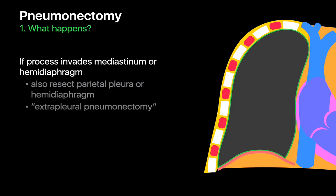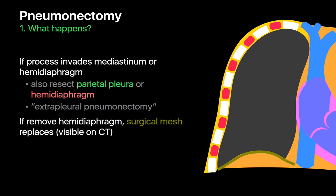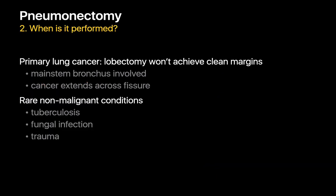In cases where the lung cancer invades the mediastinum, the parietal pleura lining the interior of the ribcage may also be removed in addition to the lung and visceral pleura, resulting in an extrapleural pneumonectomy. In situations where the cancer involves the hemidiaphragm, the hemidiaphragm may also be removed and replaced by a surgical mesh that's visible on CT. Pneumonectomies are usually reserved for cases where a lobectomy alone may not achieve clean margins, such as when cancer extends across a fissure or involves the mainstem bronchus.